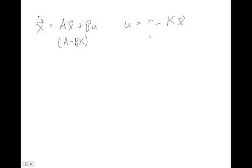So this is what an observer is about. It's fundamentally based on the assumption that we don't know the full state vector through sensors, but we do have a model of our system. The question is: can we make this thing called an observer that effectively estimates our states so we can plug that estimate into our controller? We're not going to know the states exactly through sensors, but we're going to estimate them or observe them.